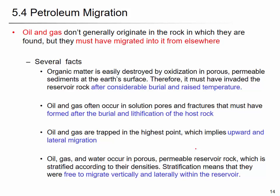So far, we have seen diagenesis — from organic matter to kerogen — and catagenesis — from kerogen to petroleum, or hydrocarbon. The source rock that contains the hydrocarbon is mostly shale, but the reservoir is in sandstone or carbonate, which has high porosity. So source rock is different from the reservoir, and there must have been some movement of petroleum from source rock to reservoir. Oil and gas don't originate in the rock in which they are found — they must have migrated into it from elsewhere.